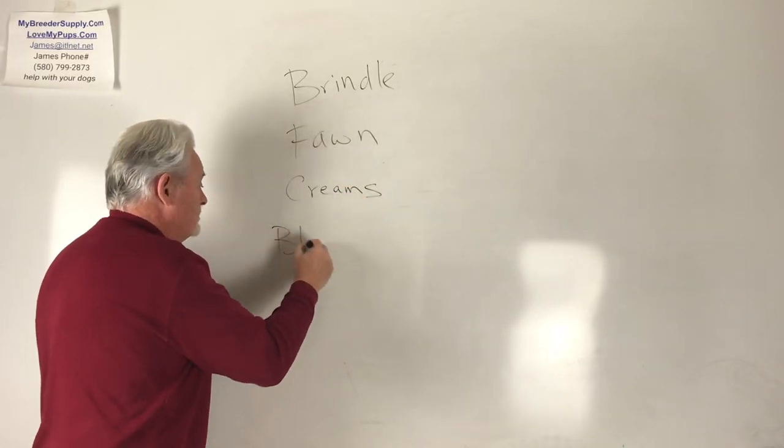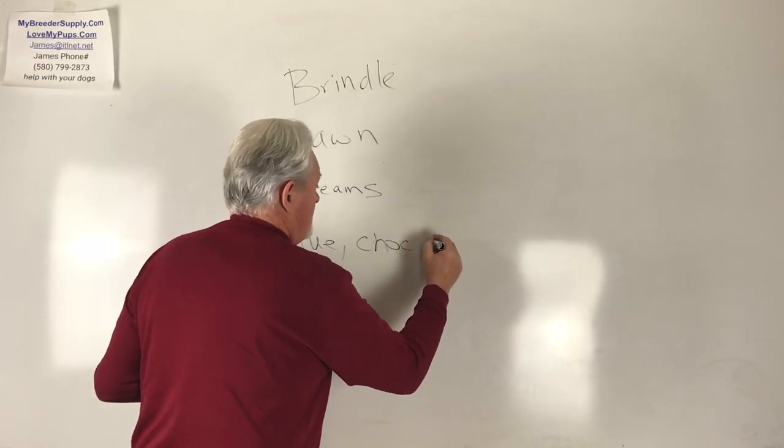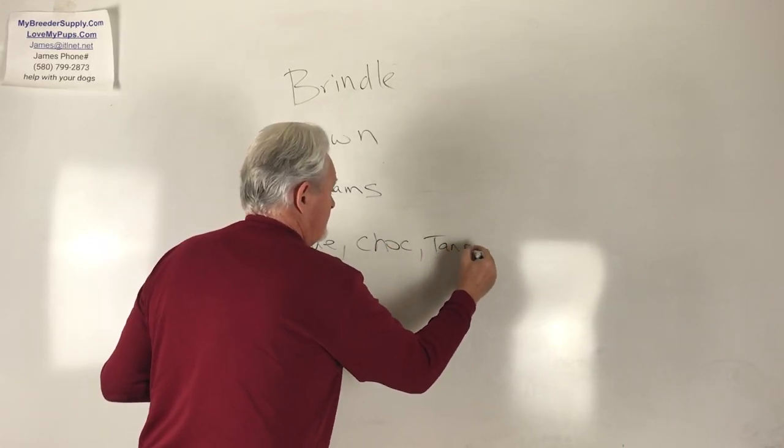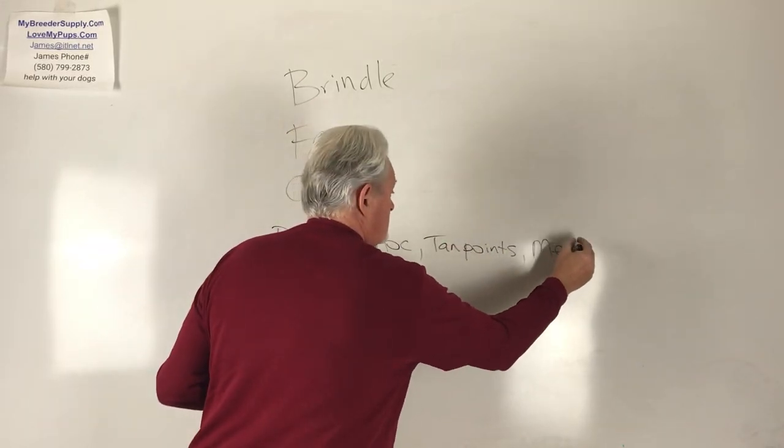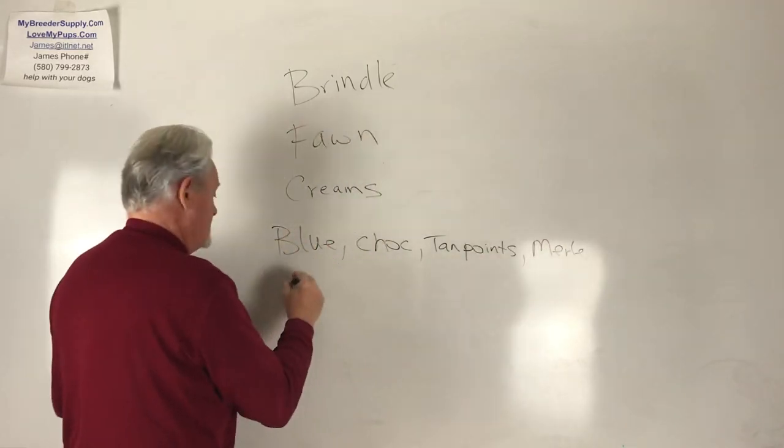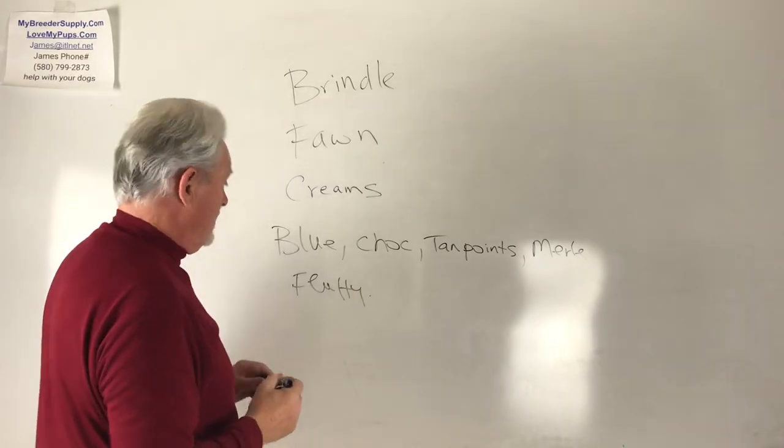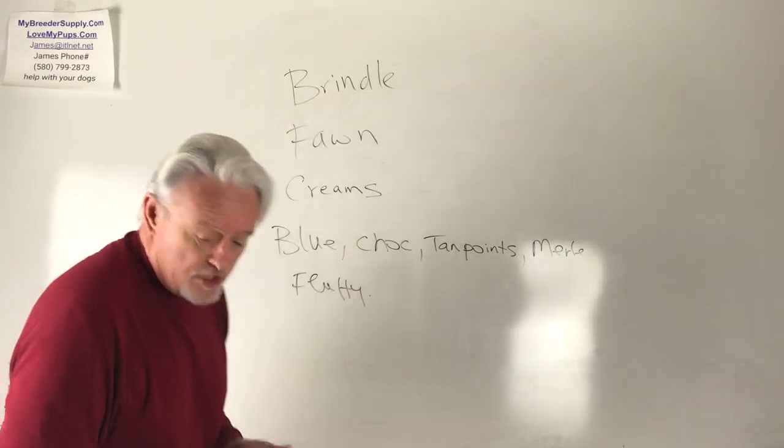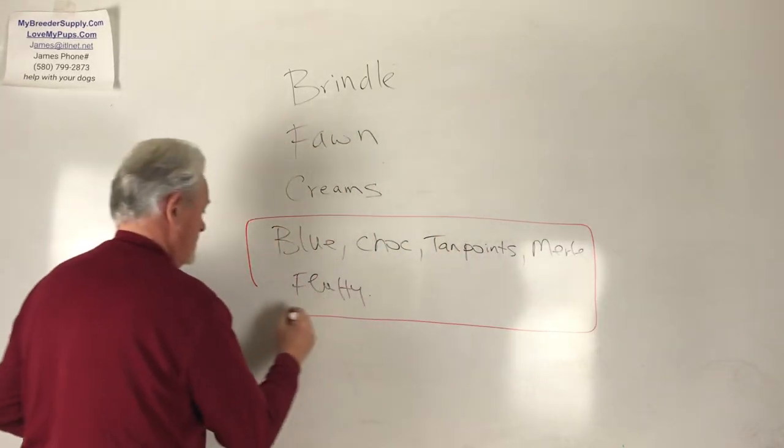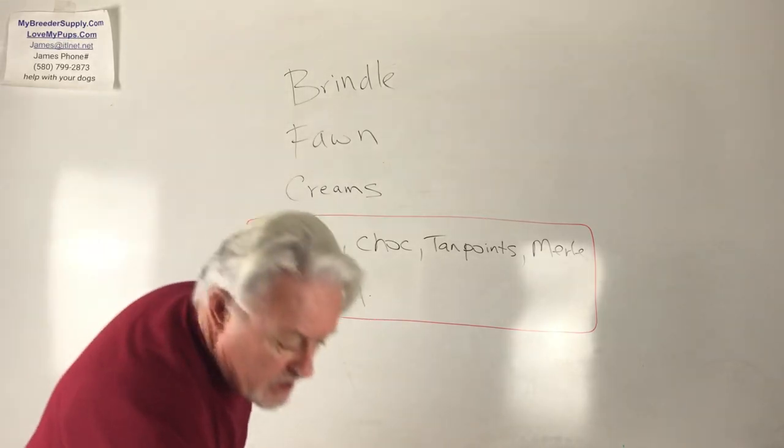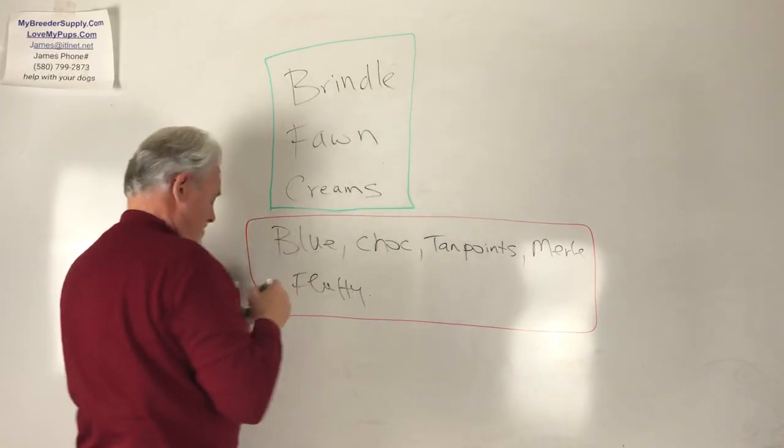If you've got blue, chocolate, something with tan points, merles, fluffies, and other colors that I can't even think about right now, they are all not on the form. If you show those in the show ring, you're going to get thrown out of the show ring.